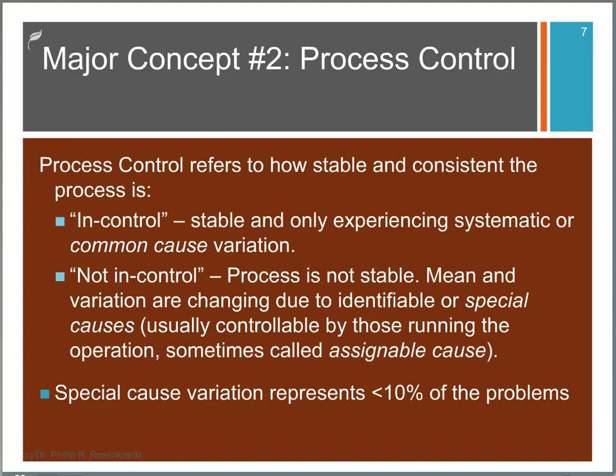The second major concept is process control. This refers to how stable and consistent a process is. If a process is stable, that is only experiencing random built-in variation or common cause variation, we say it's in control. If it's experiencing assignable cause variation, then we say the process is not in control. Note that a process can be stable and in control, but because of excessive variation, it may not be capable. So capability and control are two different things, and we're concerned about both.